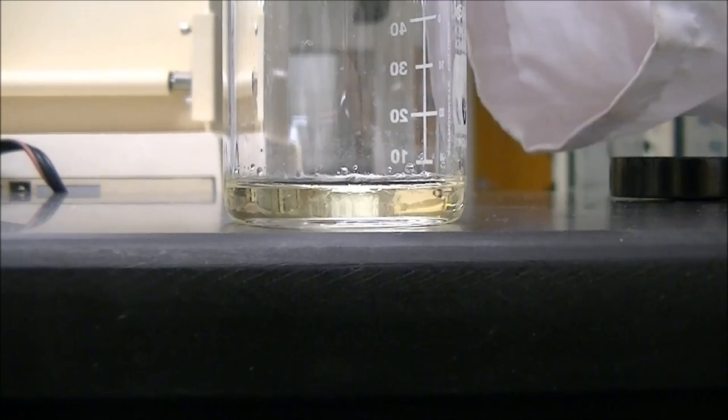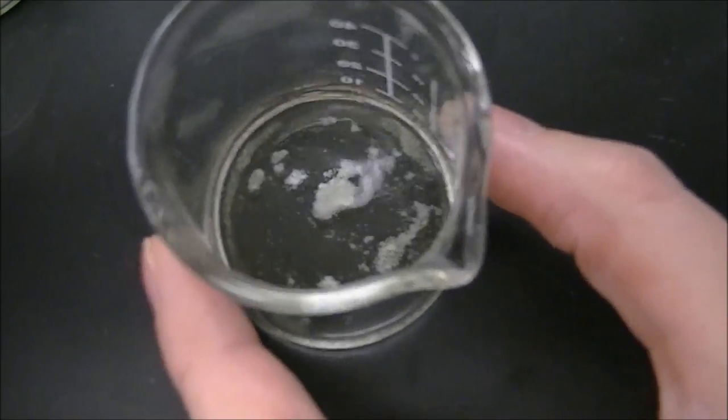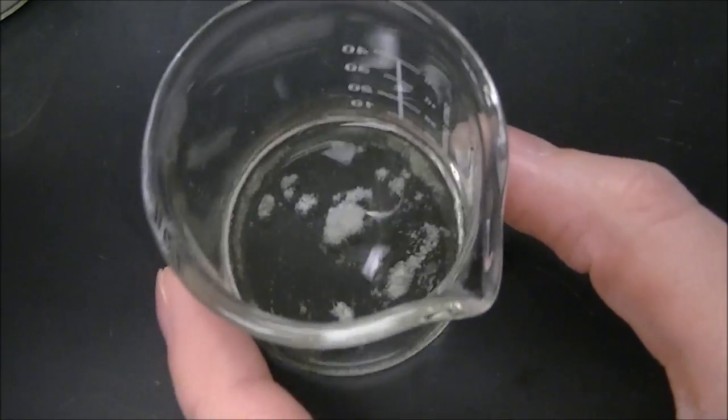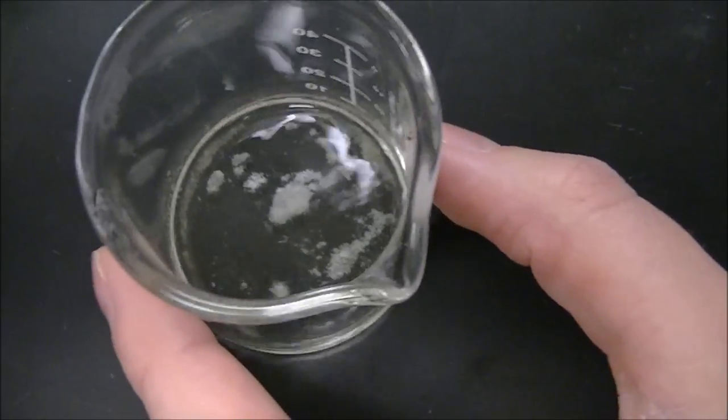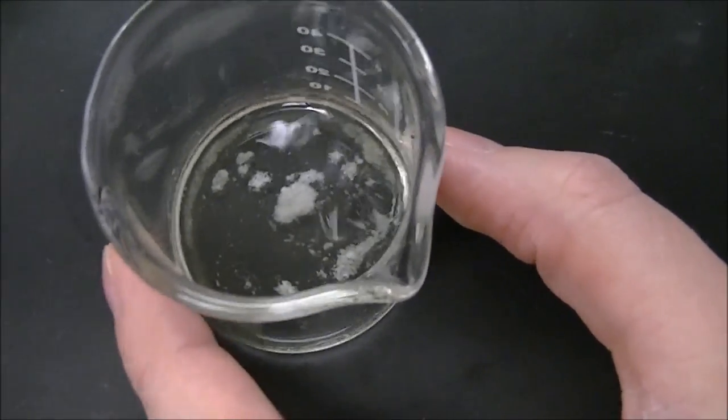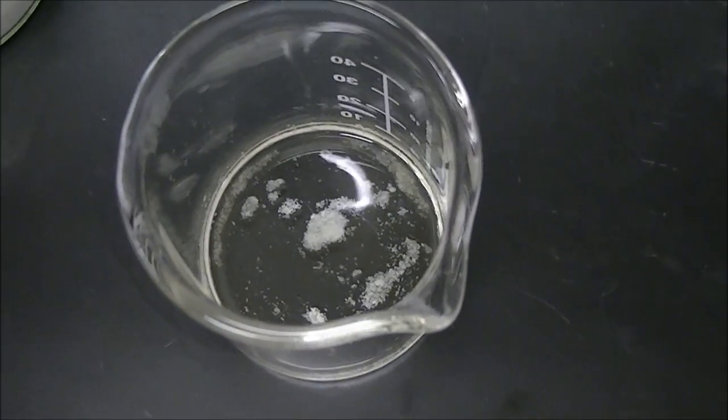As you pour in your sodium sulfate, you'll see that it starts to clump up on the bottom. So as we're swirling it, you can see that the clumps aren't moving. That means that there is water in our solution. And we're going to keep putting in anhydrous sodium sulfate until we get kind of floaty pieces. That means that that anhydrous sodium sulfate isn't grabbing any more water.